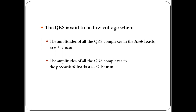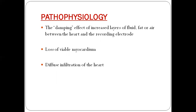The limb leads include leads I, II, III, aVL, aVR, and aVF, while precordial leads are V1 to V6. If the QRS amplitude in the precordial leads is less than 10mm — less than ten small squares — or in the limb leads is less than 5mm, it is called a low voltage ECG. So why does a low voltage ECG occur?